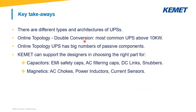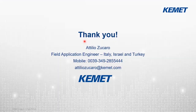The key takeaways from this webinar: there are different types of UPSs and different architectures. The online topology — also called double conversion — is the most common UPS for high-power applications. Online topology UPSs have a large number of passive components inside. KEMET can support designers in choosing the right part for both capacitors and magnetics — including EMI safety caps, AC filtering caps, DC-Links, snubbers, AC chokes, power inductors, and current sensors.